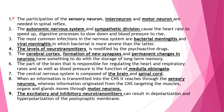Number two: the autonomic nervous system and sympathetic division cause the heart rate to speed up, digestive processes to slow down, and blood pressure to rise. It has a different effect on every organ.